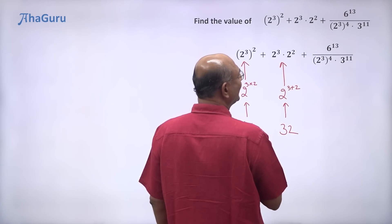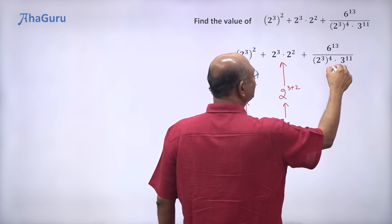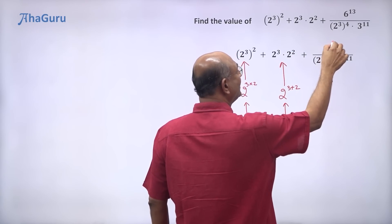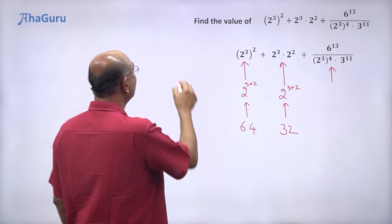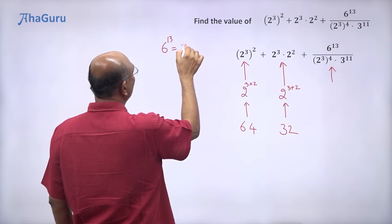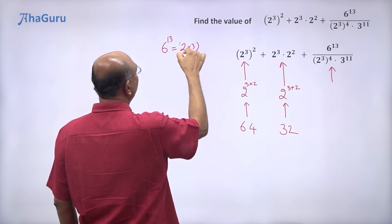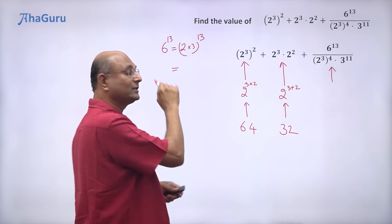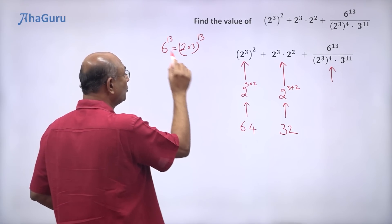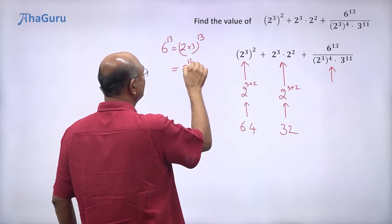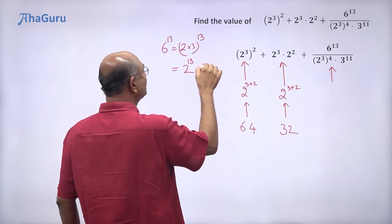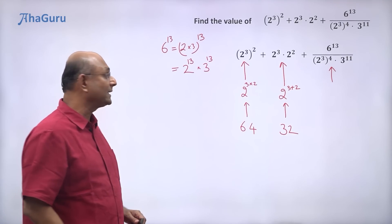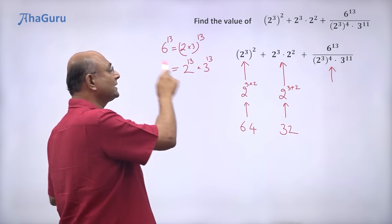Now what about 6 to the power of 13? Well, 6 is 2 into 3, so we can write this as (2 into 3) to the power of 13. Think of it as 2 into 3, repeated 13 times — so 2 comes 13 times and 3 comes 13 times. Therefore, 6 to the power of 13 equals 2 power 13 into 3 power 13.